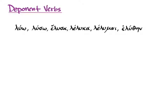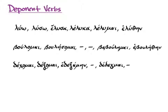But you may have noticed in the vocabulary for unit 11 of Hanson and Quinn, some verbs that don't look like that — missing some principal parts, and lacking the familiar omega endings in the first and second principal parts, or the familiar alpha ending in the third. These are deponent verbs. Deponent comes from the Latin verb depono, which means to put aside.